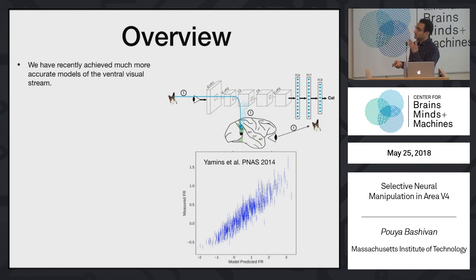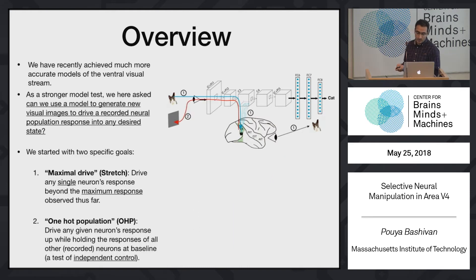So what we wanted to do next was to extend this. We are making predictions about the outputs that these neurons are making, but we thought this might not be the end of it. So what we're trying to show is that we're going to use these models in order to synthesize images now so that we can have control over the output of these neurons. Basically, we want to drive these neurons, or population of neurons, into desired states. So here we're going to talk about two specific cases. One is to maximally drive, or we call it stretching, the output of each of these neurons to any values beyond what we've seen before. The second case we call one hot population, which is basically trying to drive one neuron up while maintaining the responses of all the other measured neurons around baseline responses.